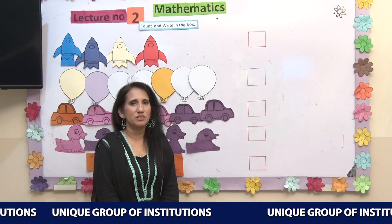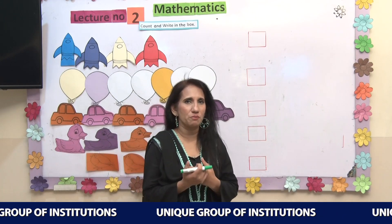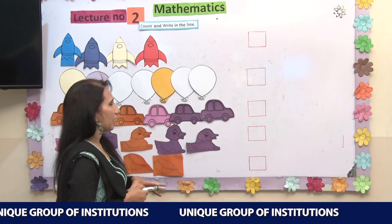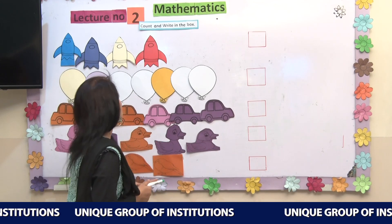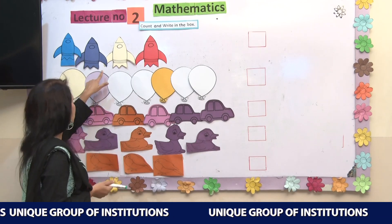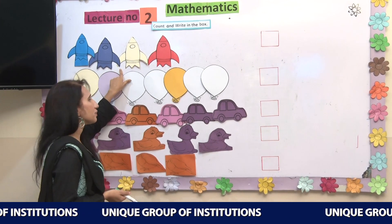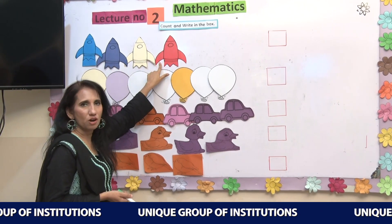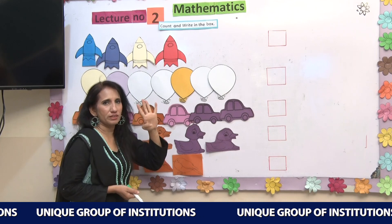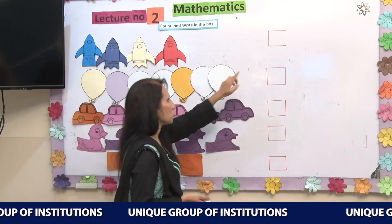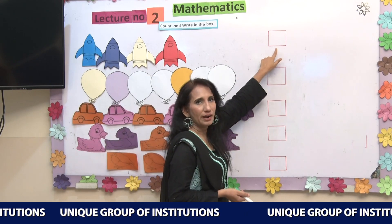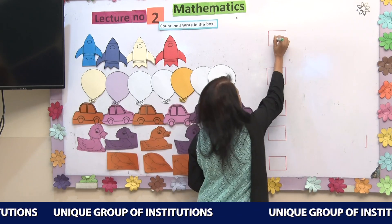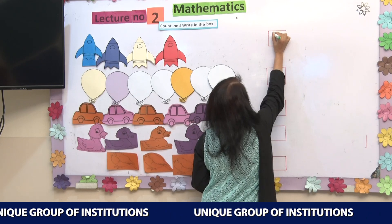We have done the concept of zero. I hope you have understood it very well. Now we are going to do another activity: count and write. Here are some rockets — let's count: 1, 2, 3, 4. There are 4 rockets, so in this box I am going to write number 4.